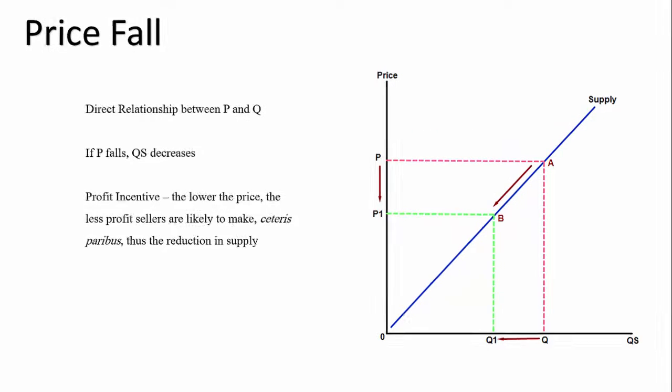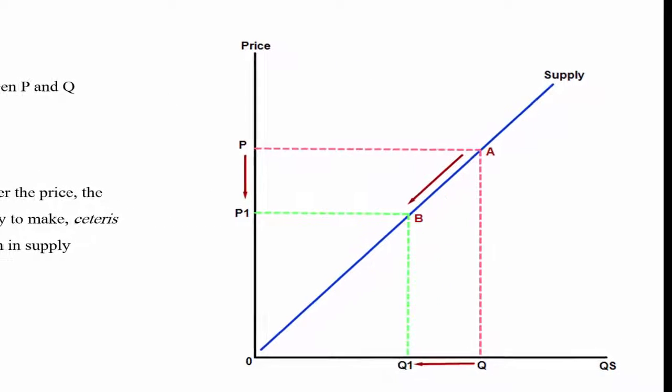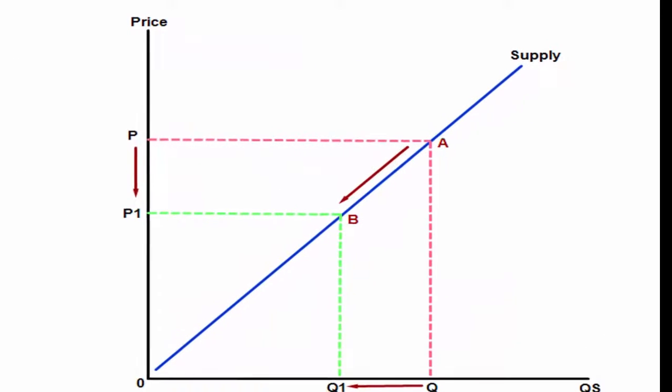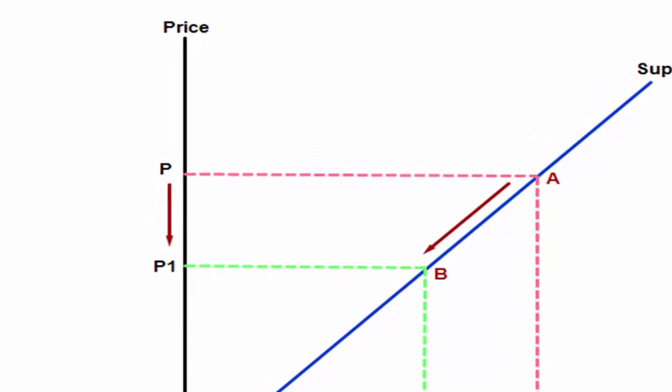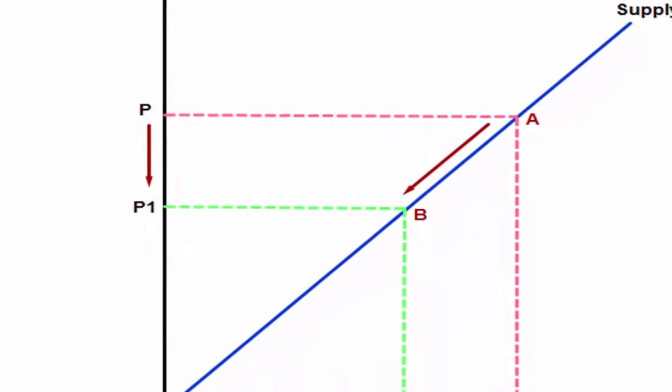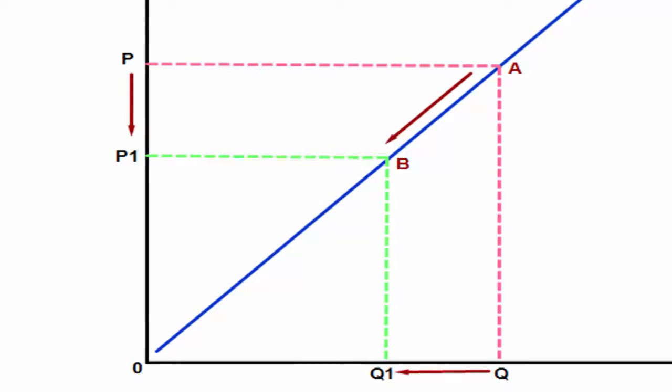A price fall is the opposite to what we've just analyzed. You can see on the graph that this time we're moving from P at point A and Q down because we've decreased the price of the good and the quantity supplied decreases.